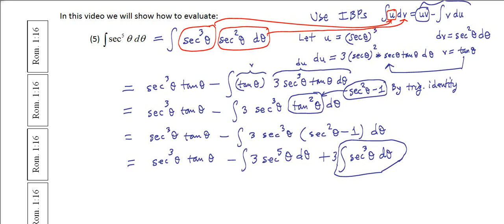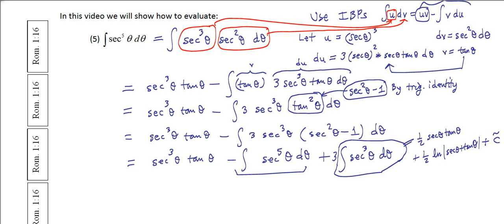The integral of secant cubed theta is one half secant theta times tangent theta plus one half natural log of the absolute value of secant theta plus tangent of theta, plus a constant c tilde. Notice I have minus 3 times the integral of what I'm looking for on the right side, so I move that to the left side. Combined with the original integral, I get 3 plus 1 equals 4 of those integrals.